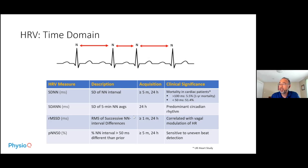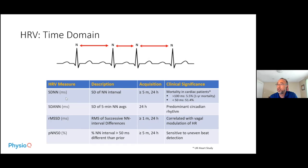Each of these measures requires a certain amount of recording time. For RMSSD and pNN50, you can use up to five minutes, and some have used as little as one minute for RMSSD. For the standard deviation of NN intervals (SDNN), many studies have used 24 hours, and the clinical significance will be discussed a bit later.